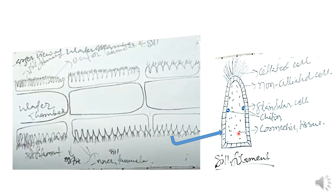Each filament has ciliated cells — what is the need of these ciliated cells? These cilia actually create a kind of motion or movement, due to which a pressure is created. Due to that pressure, the water from the incurrent siphon enters inside the body of Unio, and this makes the entry and resting of water possible inside the water chambers present in the body of Unio. Hope you have got the concept of respiration in Unio. If you like the video, please like it, share it, and comment. Thank you.